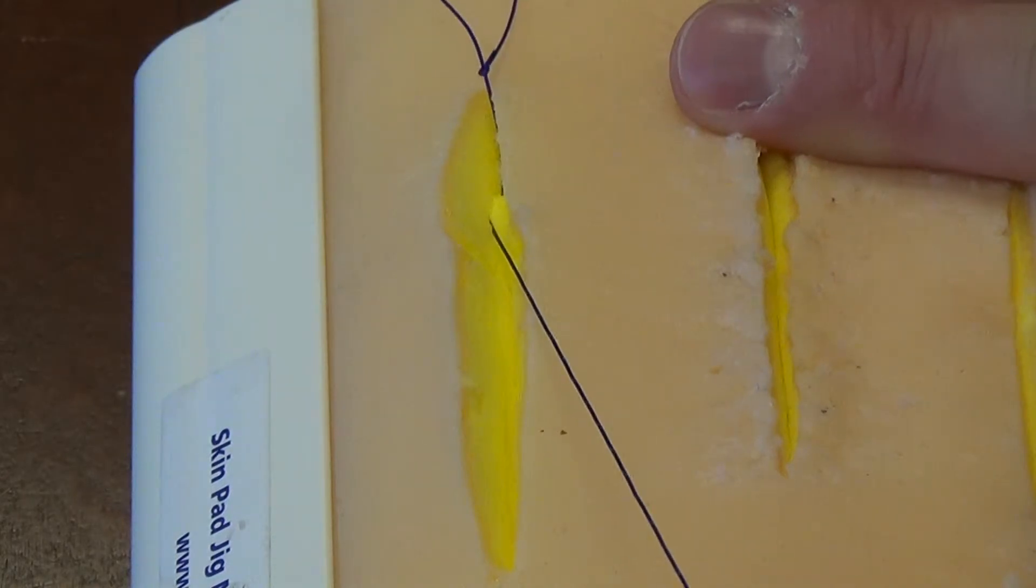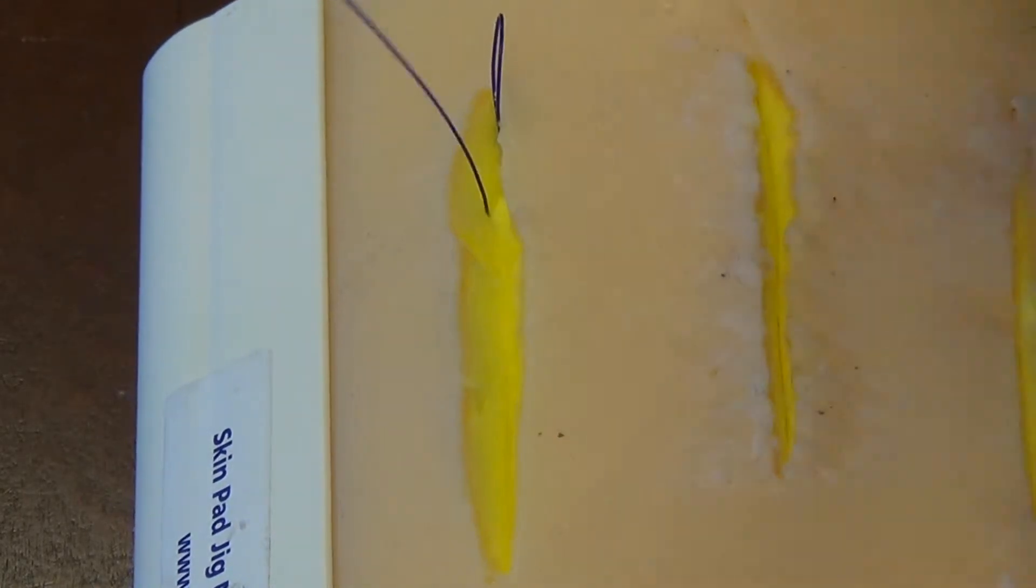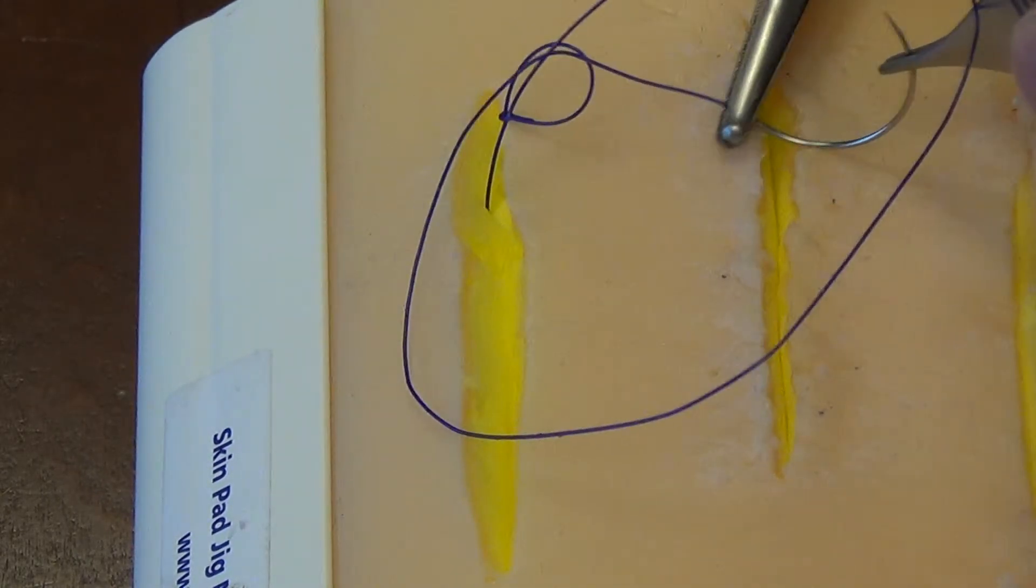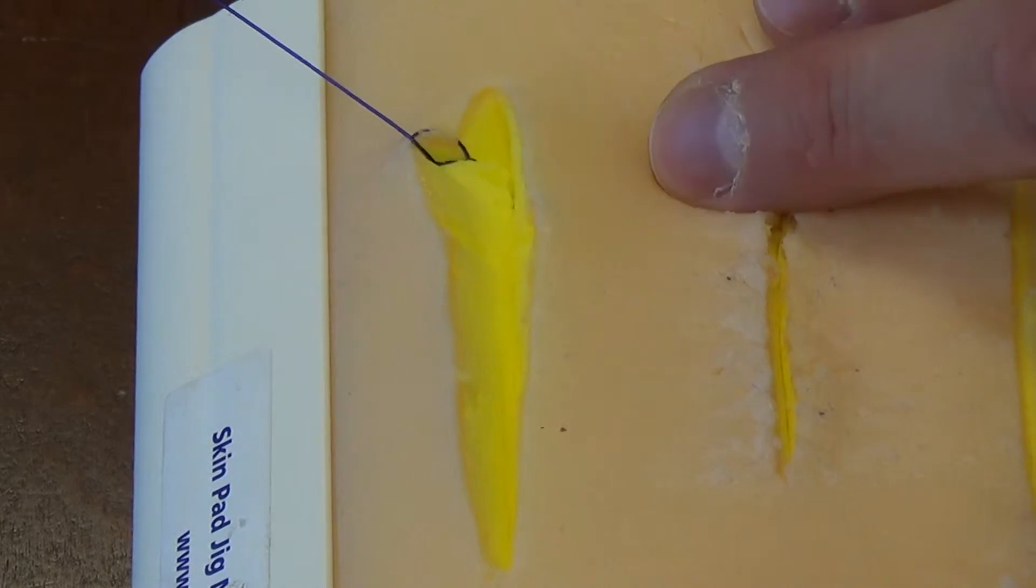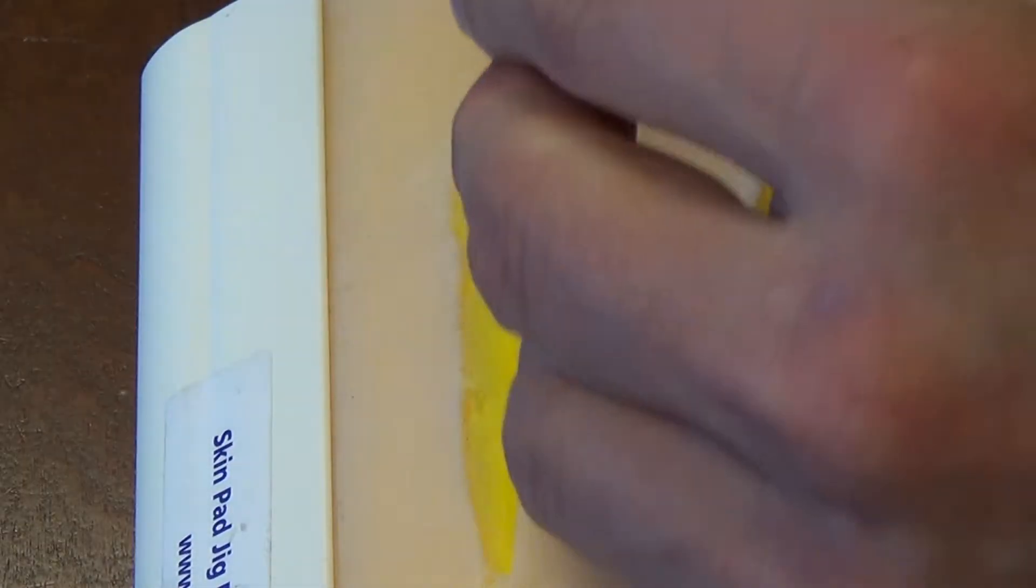As I pull the suture, you can see that that variable loop is getting smaller. Before it gets too small, I'll pass the needle through the loop and then tug on that and it creates the fixation.